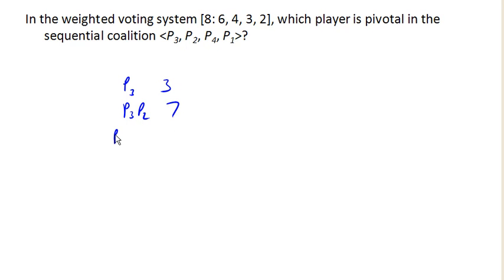When player 4 joins the coalition, now we have a combined weight of 4 plus 3 is 7, plus 2 is 9, and this is now a winning coalition.